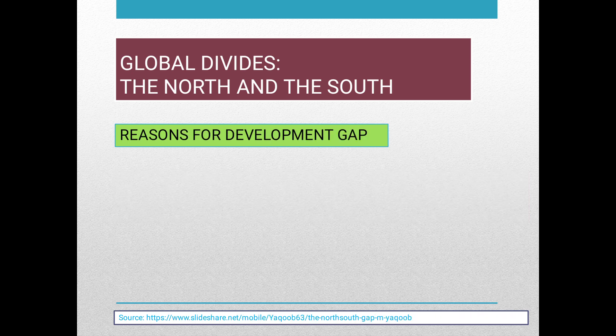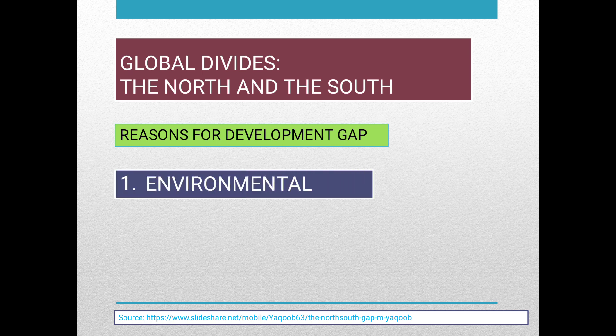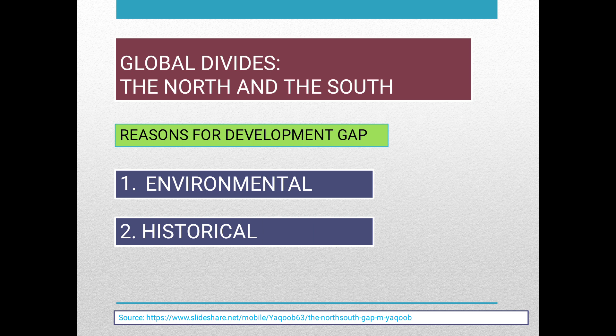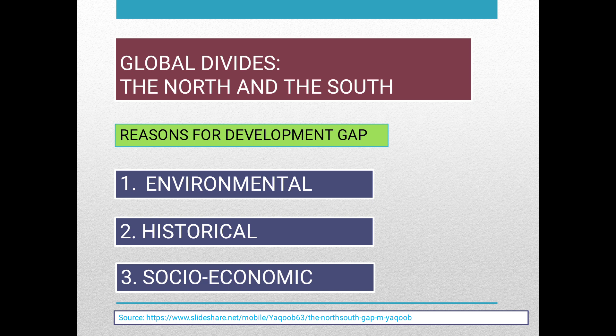There are three main reasons for the development gap. First, environmental — it has something to do with natural features, for example, soil that is very essential for agriculture. Second, historical — things which have happened in years before, for example, war. Third, socioeconomic — it has something to do with society, culture, and money.